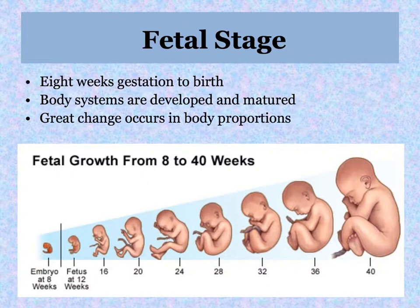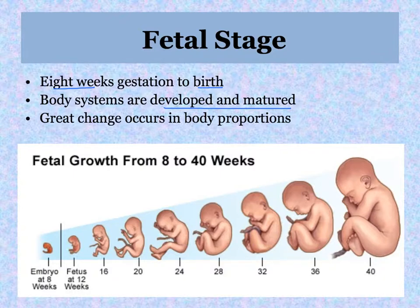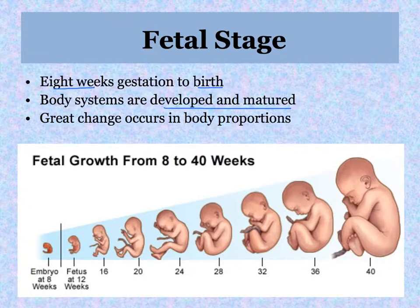The fetal stage of development goes from eight weeks until birth. During this time period the body systems started in the first eight weeks are developed and matured, and there is a great change in body proportions. The head proportionally becomes smaller compared to the entire body, though it remains fairly large compared to the adult human.